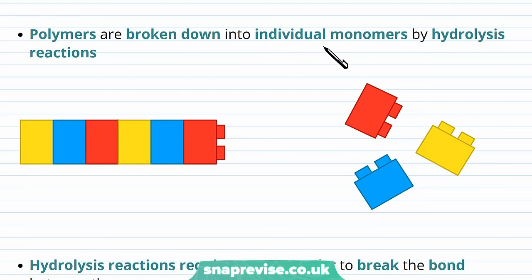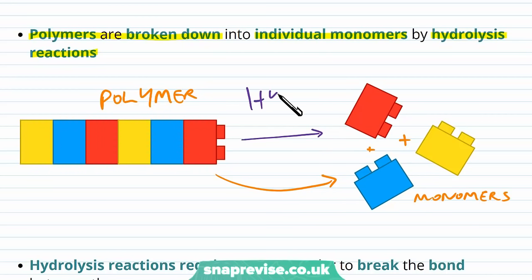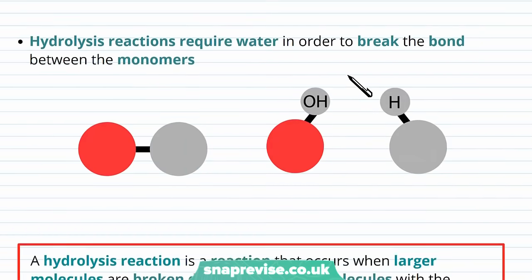What about breaking them down? For example, if we're digesting foods. Polymers are broken down into individual monomers by hydrolysis reactions. This is going backwards now. This is the reverse of condensation. So here we have a polymer breaking down into individual monomers. And this is known as hydrolysis. Hydrolysis breaking it down. Condensation would be forming it. And in this respect, we can talk about it as the reverse of condensation. Hydrolysis reactions require water. So we have to put water in in order to break the bond between the monomers.